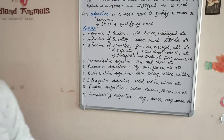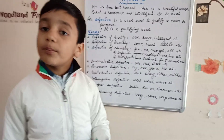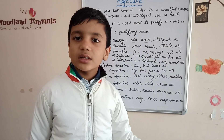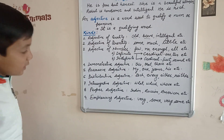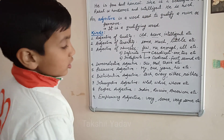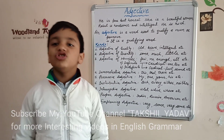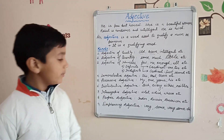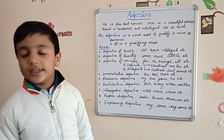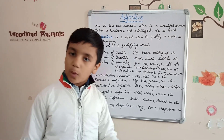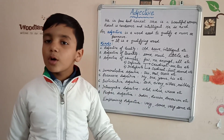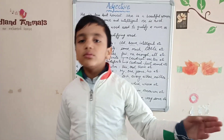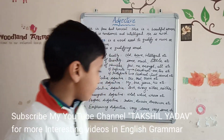Proper adjectives. The adjectives that are formed from proper nouns are known as proper adjectives. Have a look at these examples: Indian, Russian, American, Chinese, Japanese, etc. The adjective Indian has come from the proper noun India; Russian from Russia; American from America; Chinese from China; and Japanese from Japan.